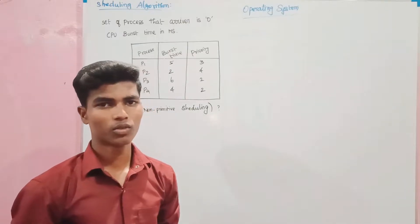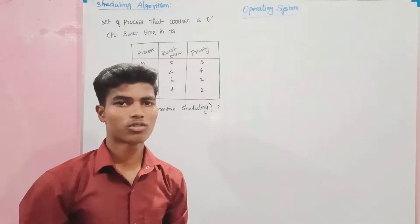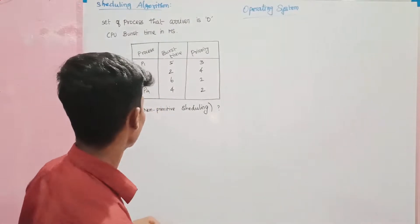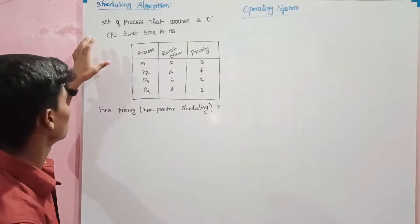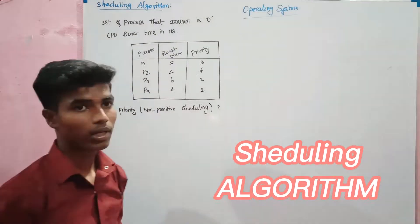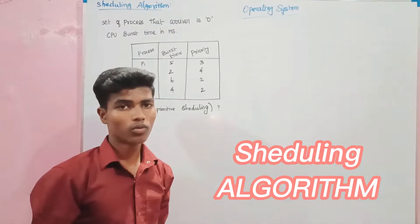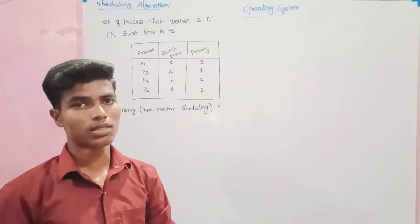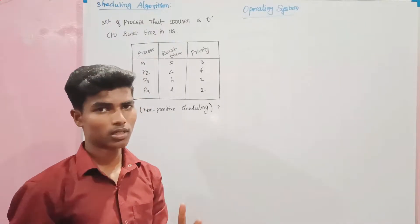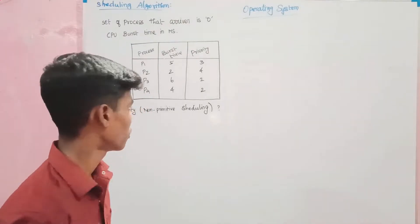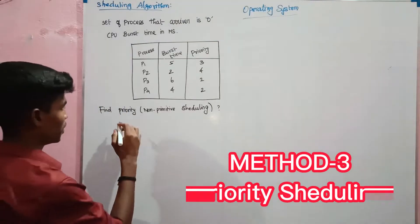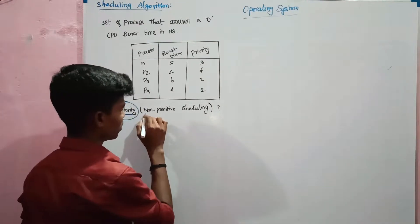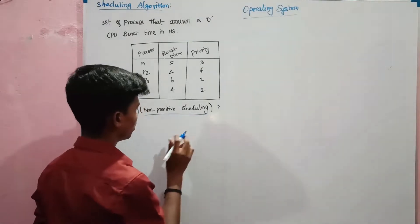Hello friends, welcome to VJ Solutions. In today's topic, we are covering the scheduling algorithm — how to find FIFO process and then SJF process. The third method is the priority method. This is non-preemptive scheduling.